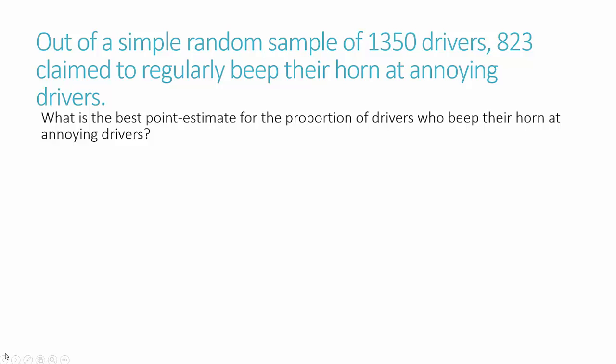What is the best point estimate for the proportion of drivers who beep their horn at annoying drivers? To find the point estimate, we want to know the proportion of drivers who do this. So we'll take the 823 and divide it by the total of 1,350. We'll call that p-hat because it is the proportion from a sample, and the decimal value is 0.61. So 0.61 is the best point estimate.